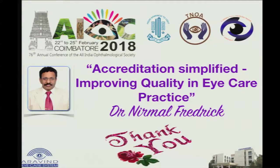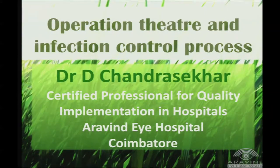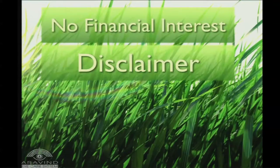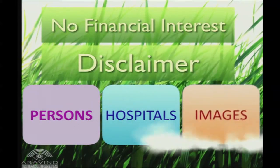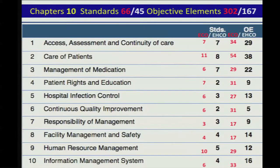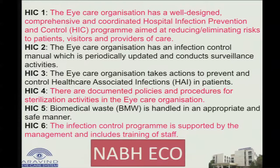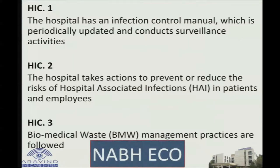Thank you Dr. Nirmal. This talk is on operation theatre layout and infection control processes — a very huge topic. There are ten chapters in NABH, and the most important one we are dealing with is hospital infection control. In the eye care standards there are six standards and 27 elements, whereas at entry level it is only three standards and thirteen elements. I suggest going through all infection control elements as a hospital — it will do a lot of good.